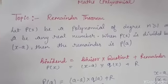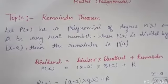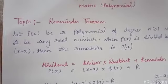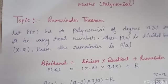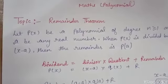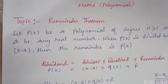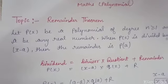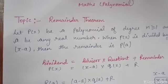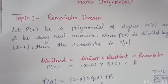That means the value of the remainder is equal to the value of the polynomial at A, where A belongs to the real numbers.